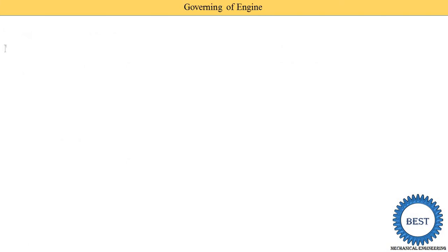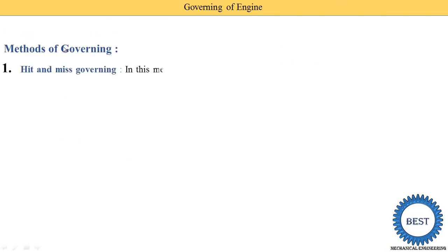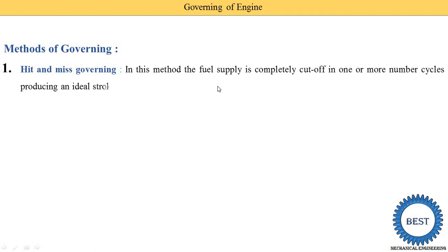Next we study the methods of governing. The first method is hit-and-miss governing. In this method, the fuel supply is completely cut off in one or more number of cycles, producing an idle cycle. From this name, 'hit' means sometime the fuel is supplied, 'miss' means sometime the fuel is not supplied. For more details on this system, refer to the playlist available via the link in the description.